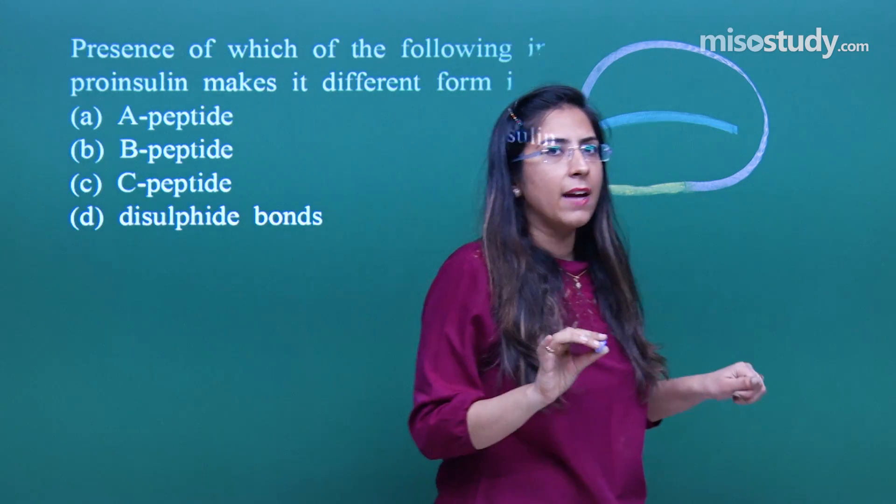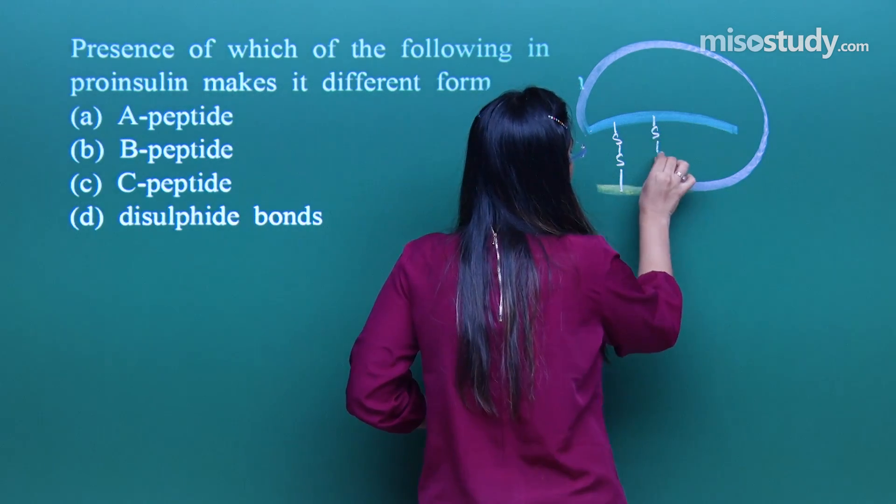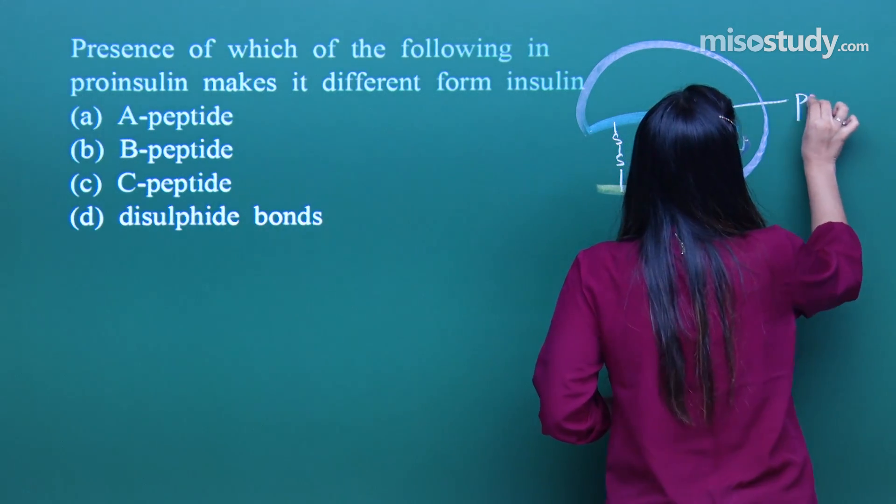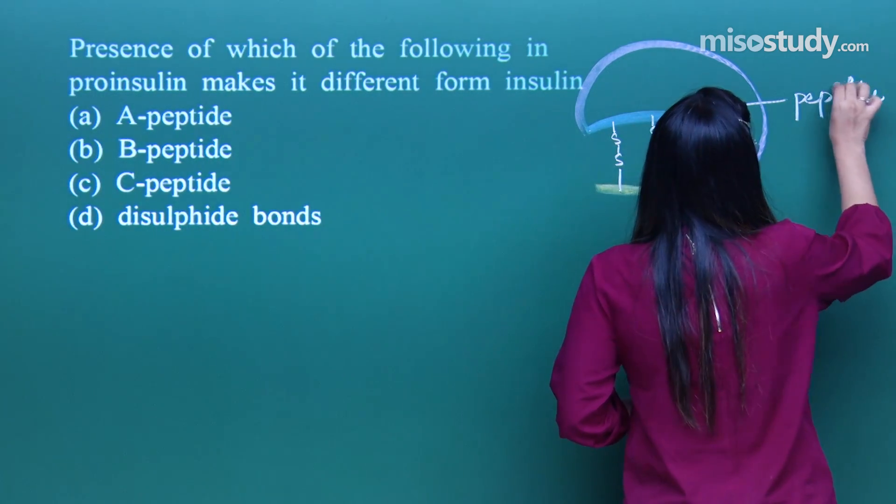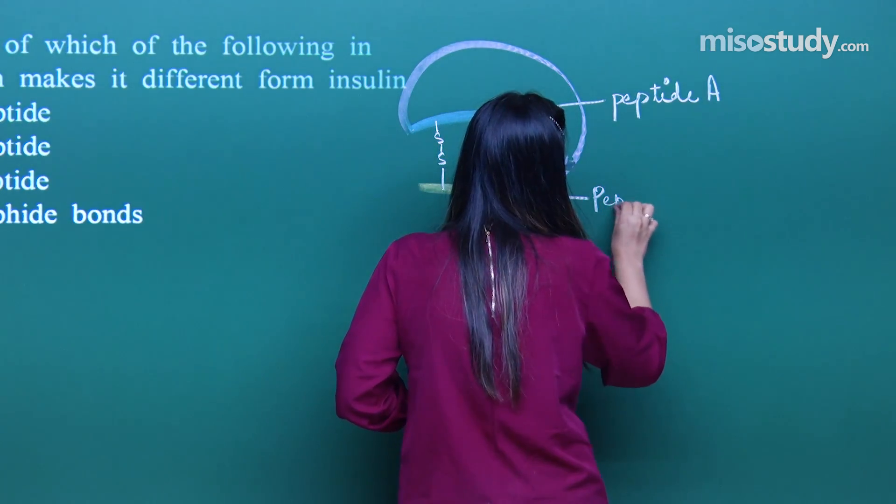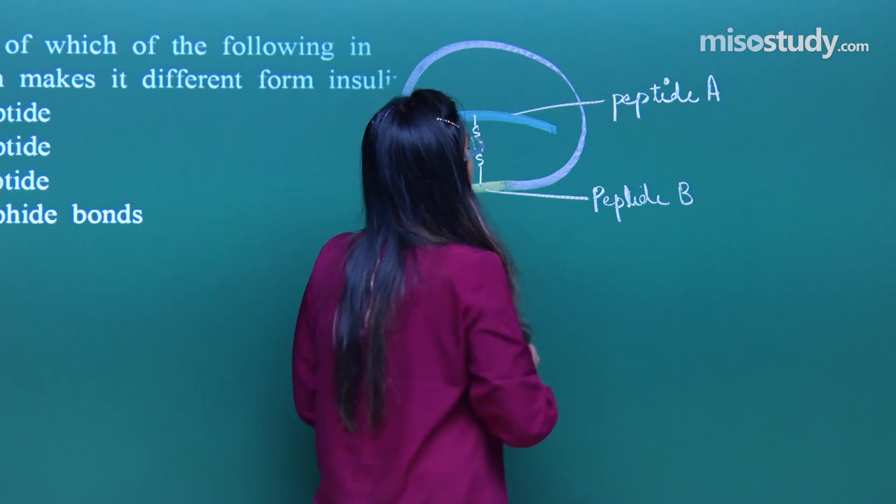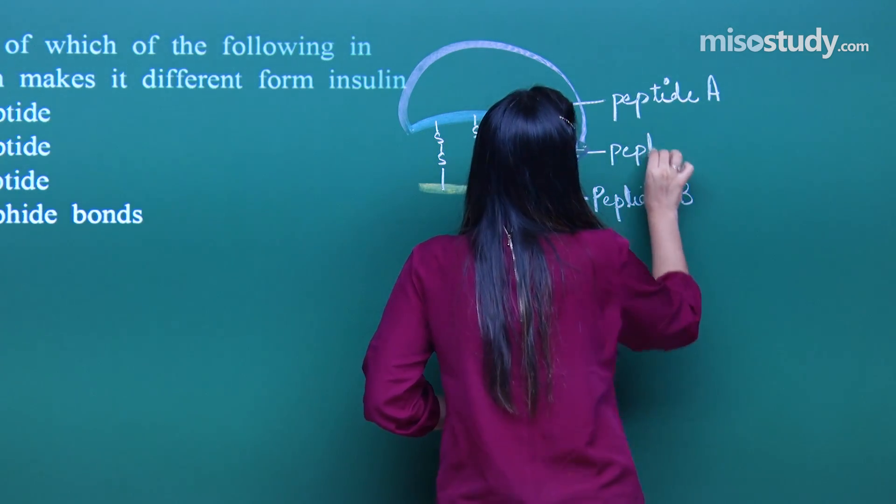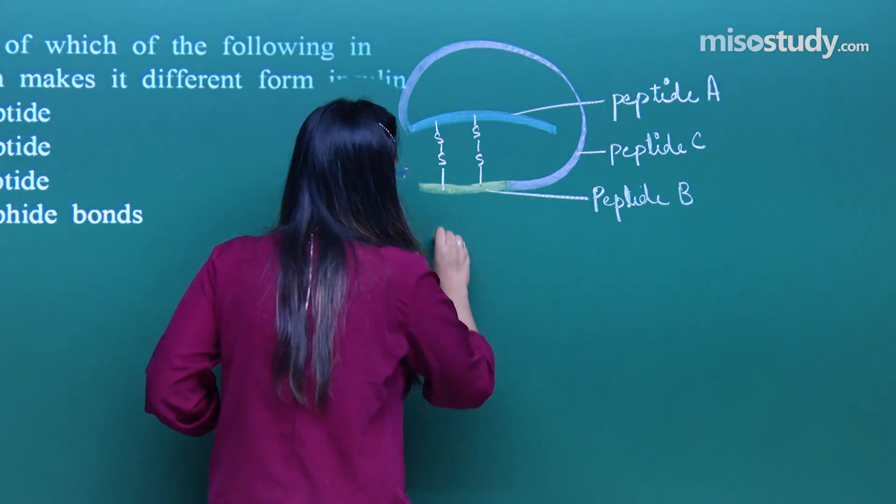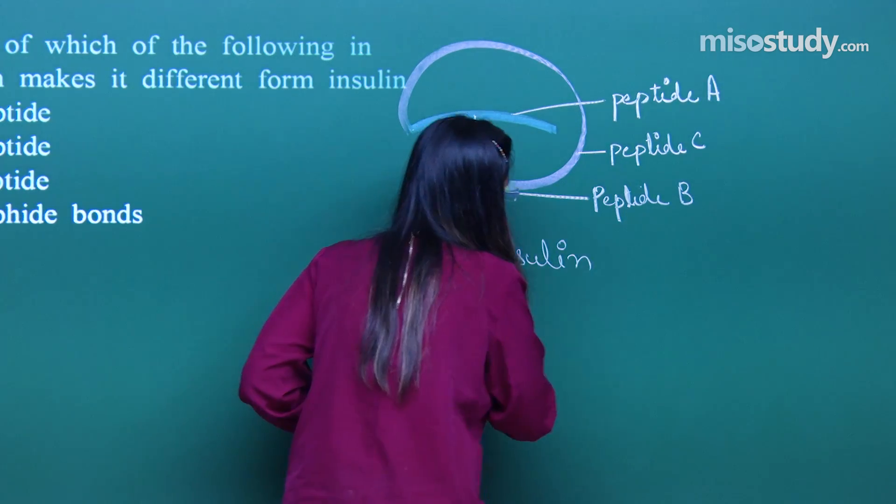When we see the exact structure of these, we can see that the disulfide bonds are present. Let us label this. This is peptide A or chain A. This is peptide B and the connection chain is called peptide C. Now this is called pro-insulin.